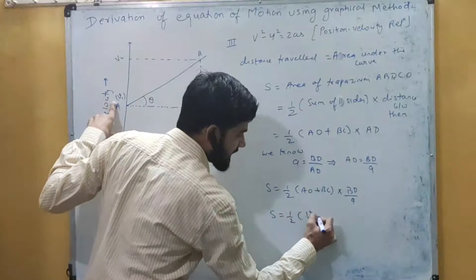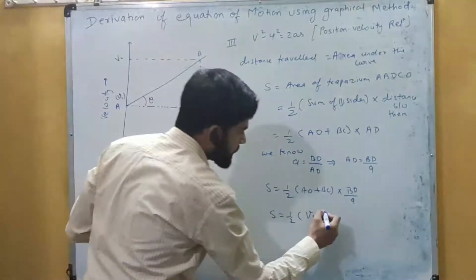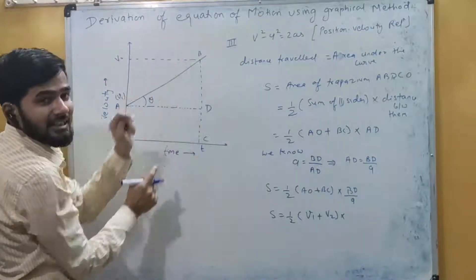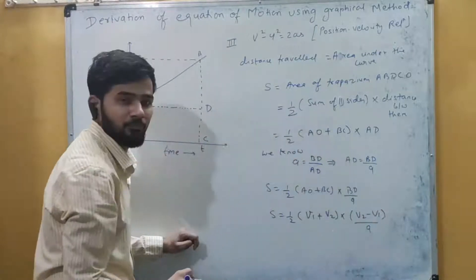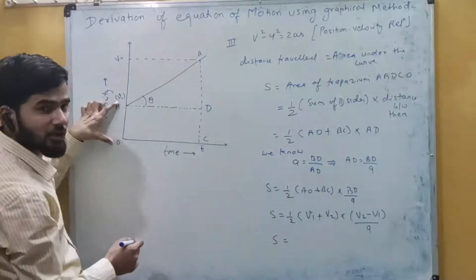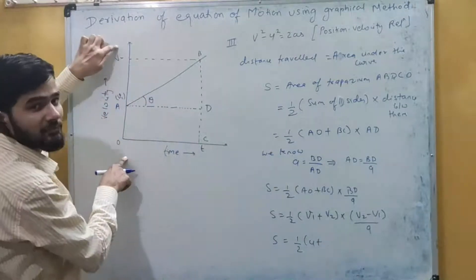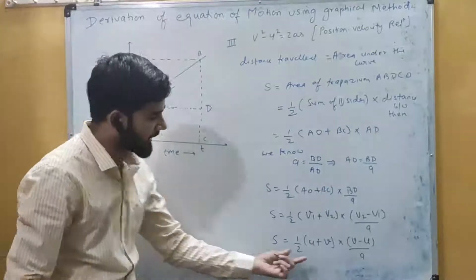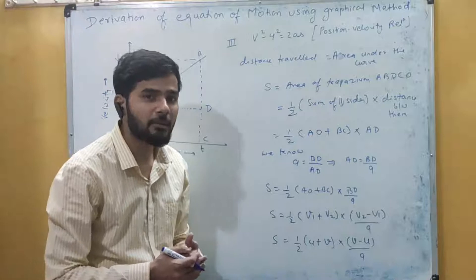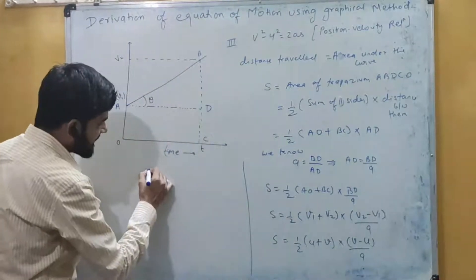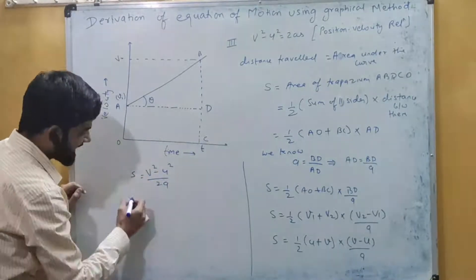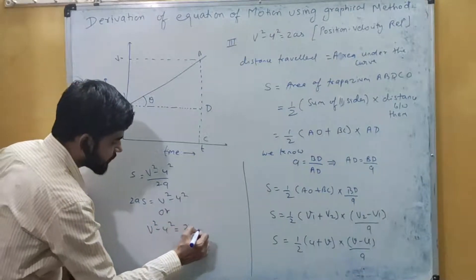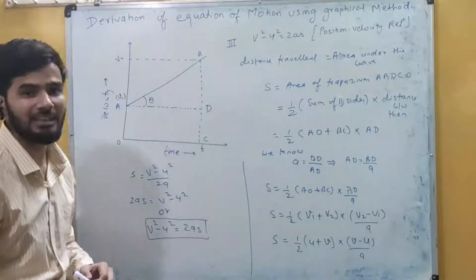Now AO is the initial velocity v₁ (represented by u), BC is the final velocity v₂ (represented by v), and BD equals v₂ − v₁ = v − u. So s = ½ × (u + v) × (v − u)/a. Using the identity (a + b)(a − b) = a² − b², this gives s = (v² − u²)/2a. Rearranging: 2as = v² − u², or v² − u² = 2as. This is the third equation of motion.